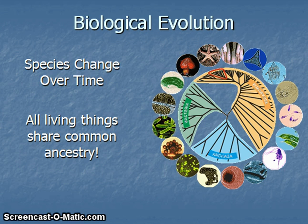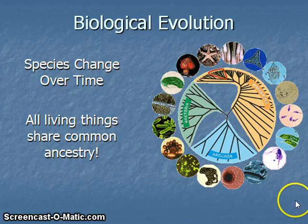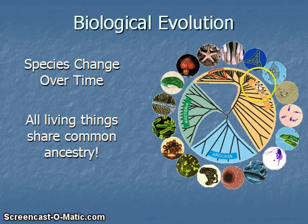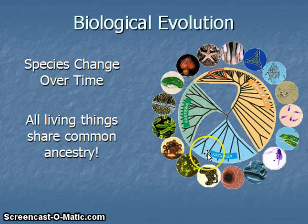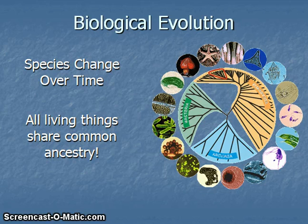Within the topic of biological evolution, we understand that species change over time. We're also relating Charles Darwin's inference that all living things share common ancestry. The image on the right-hand side of the slide illustrates this point. We see many life forms around the outside edge of a circle — a starfish, rod-shaped bacterial cells — and we can see the three domains: Eukaryota, Bacteria, and Archaebacteria. All of these life forms have branches going directly to the center, which represents the universal common ancestor from which all life forms have descended.